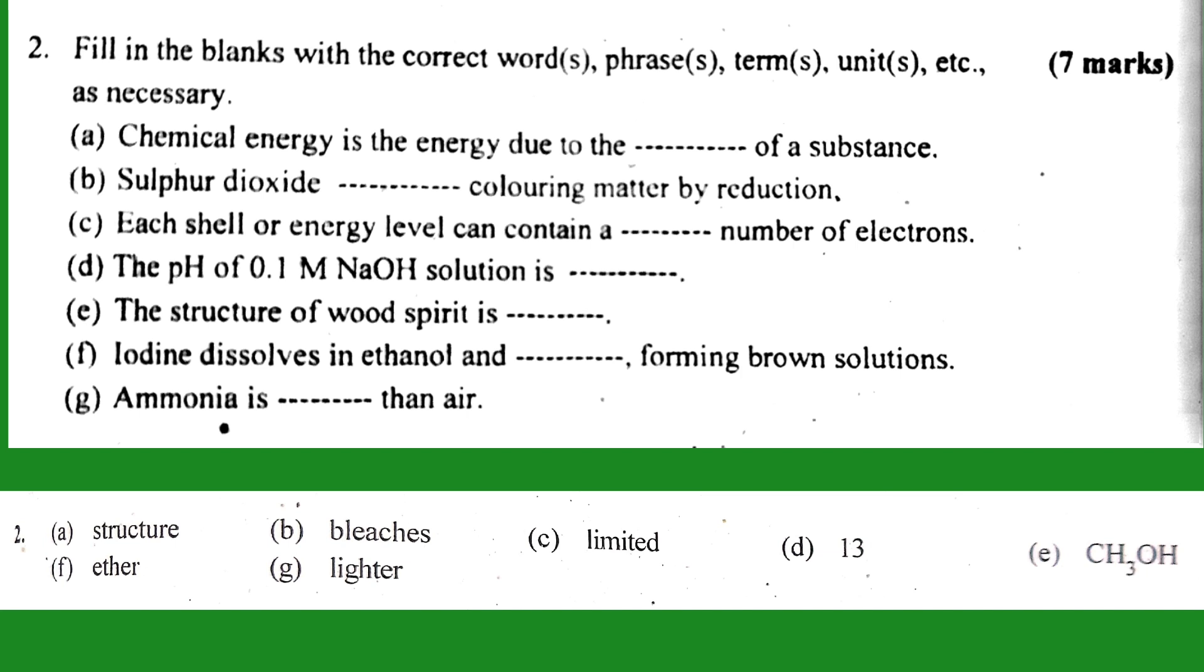Number D: the pH of 0.1 M NaOH solution is 13. If you want to find the pH of 0.1 M NaOH solution, you calculate pOH first. pOH equals negative log of 0.1, which equals 1. Since pH plus pOH equals 14, pH equals 14 minus 1, which equals 13.